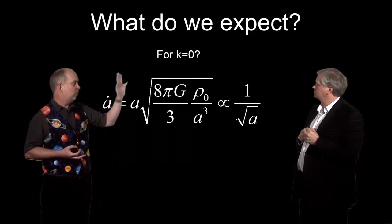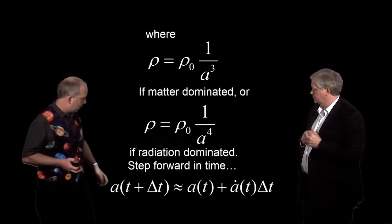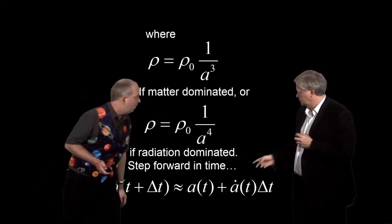Good. So let's pick the simplest case, k equals zero, a flat universe. What's going to happen now? Well, the last term here disappears, because k is zero.